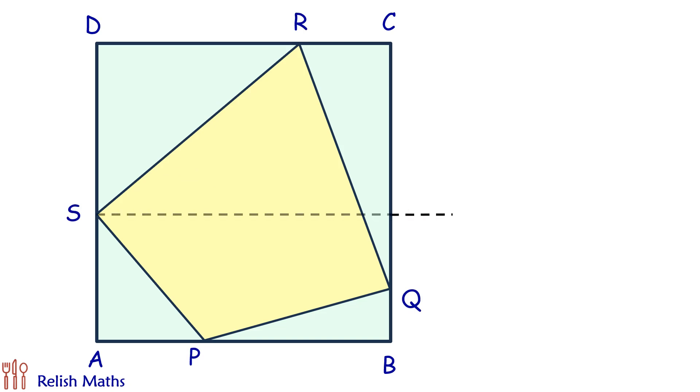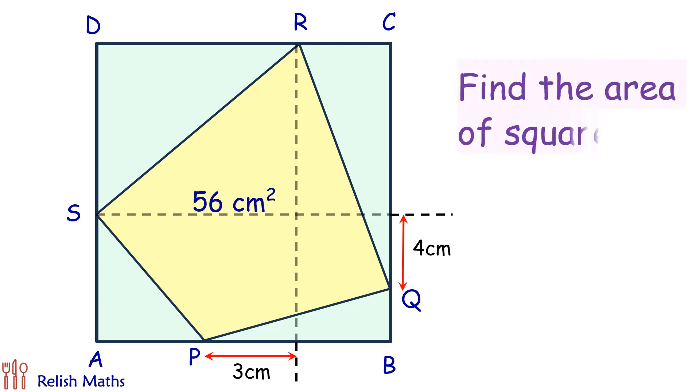The distance of point S and Q, the vertical distance, is given as 4 centimeters, and the horizontal distance between point R and point P is given as 3 centimeters. The area of quadrilateral PQRS is given as 56 centimeter square. Using this data we have to find the area of square ABCD.